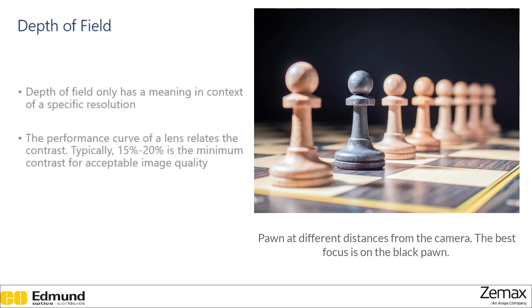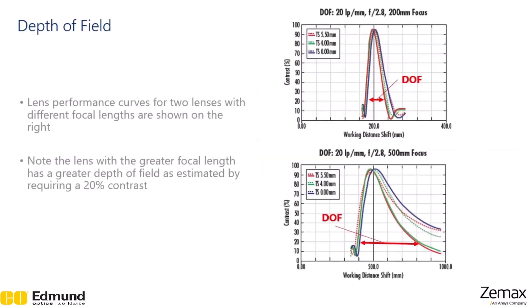Typically, we use these things called performance curves of a lens to relate the contrast to the depth of field. And a 15% to 20% contrast is the minimum contrast for acceptable image quality. Again, this is just a bar that's commonly used, and it will depend on your application for what you consider a sufficient contrast. So these are some examples of performance curves. Don't worry too much about the details. Just know that they represent the contrast that is given by the optical system for different working distances. And the depth of field is the range of working distances where we get at least a 20% contrast.